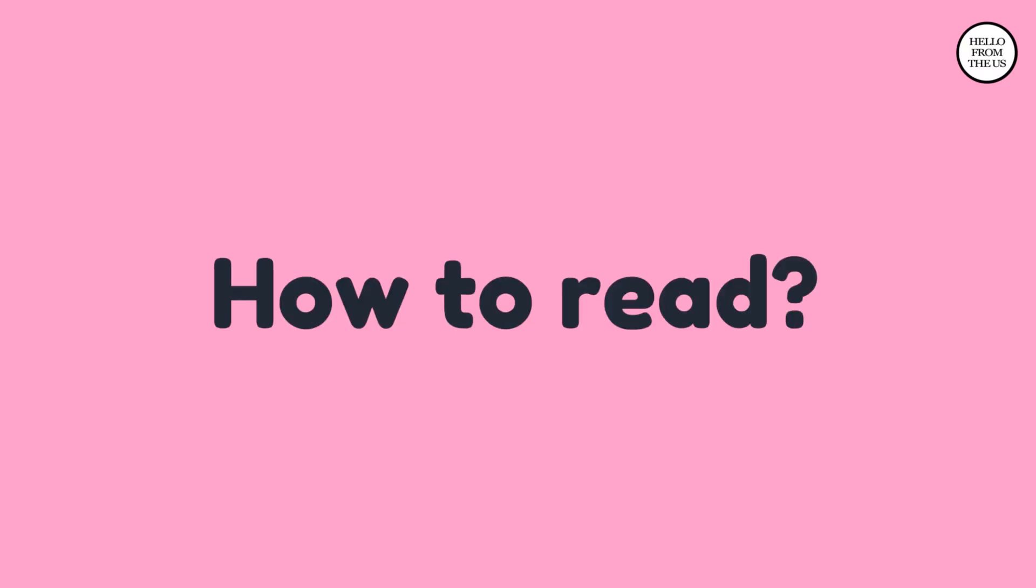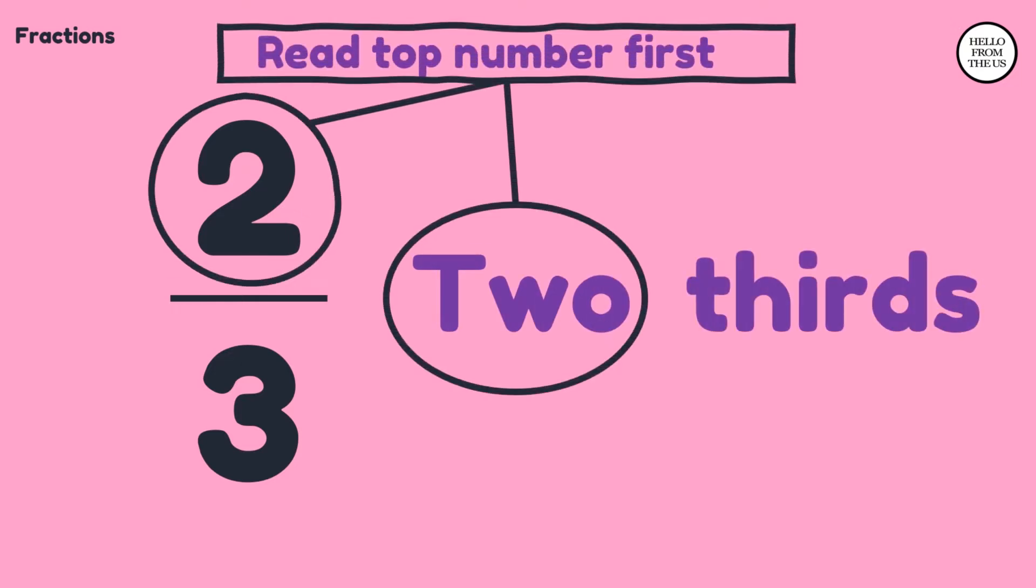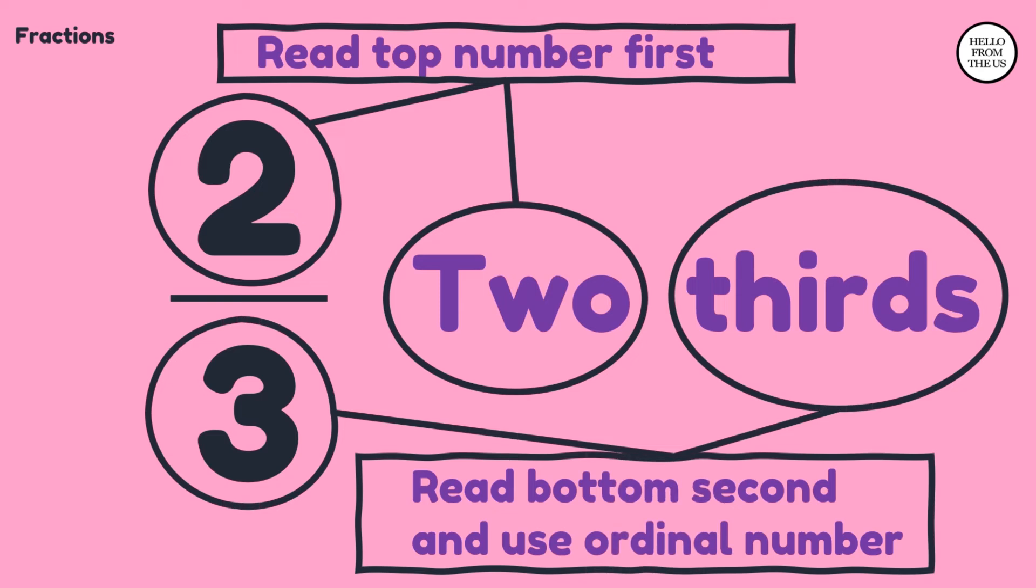And how can we read this? Two-thirds. Always read the top number first followed by the bottom number using ordinal numbers.